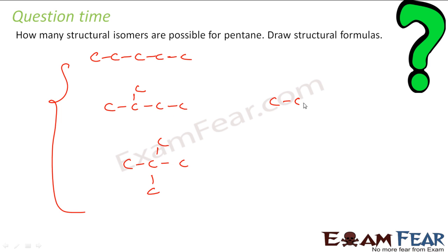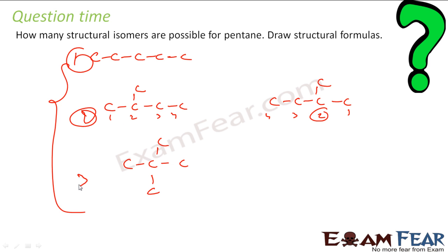Drawing it one way or the other is the same, because you take the lowest number. You count from one direction in one structure, and from the other direction in the mirror image — both give the same compound. Because the rule is to use the lowest number where the side group is attached. This side group becomes a methyl group, so counting gives positions one, two, and three. There are three possible isomers of pentane.